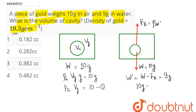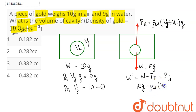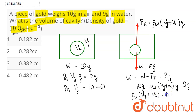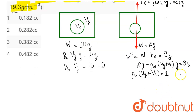The buoyancy force equals ρ_water multiplied by the total volume of water displaced, which equals the volume of gold plus the volume of the cavity, multiplied by g. So: 10 - ρ_water × (Vg + V_cavity) × g = 9g. After g cancels, this gives ρ_water × (Vg + V_cavity) = 1.